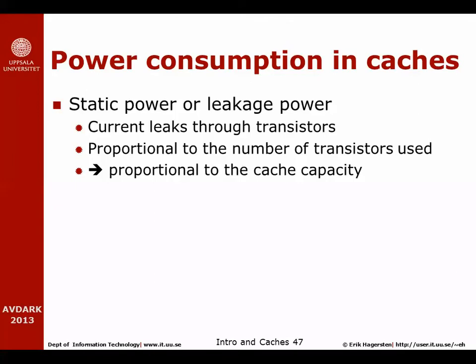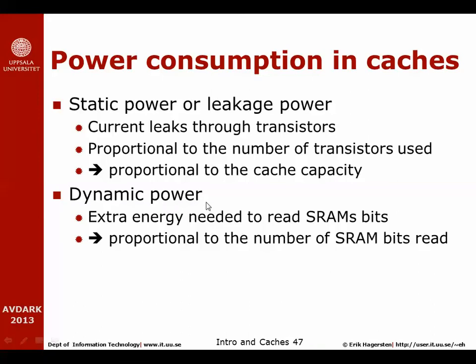Power consumption is becoming more and more important, applying mostly to CPUs but also increasingly to caches. We have to understand how to design caches that are not only fast but also consume the least amount of power. There are two kinds of power: static power or leakage power, which comes from the fact that each transistor, even if turned off, will leak some current, and this power is proportional to the cache capacity — the more transistors, the more leakage.